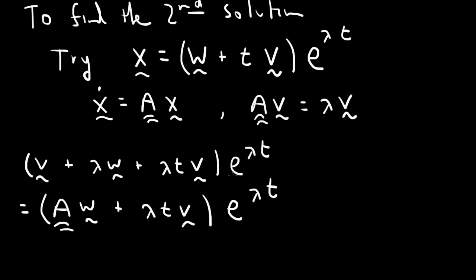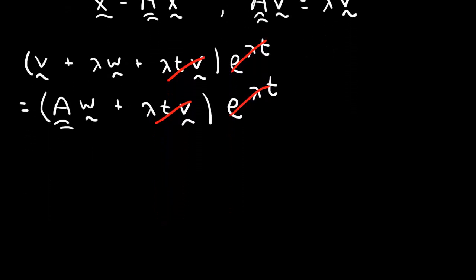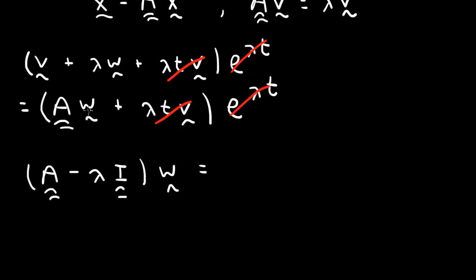We cancel the e to the lambda t throughout and compare both sides. The lambda t v terms cancel on both sides. What remains is: v plus lambda w equals Aw, which rearranges to Aw minus lambda w equals v, or equivalently (A minus lambda I) times w equals v. Since lambda and v are known, this is an equation for the unknown vector w.